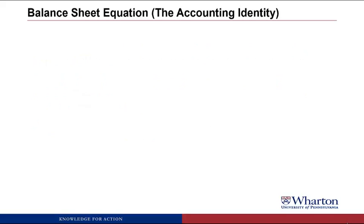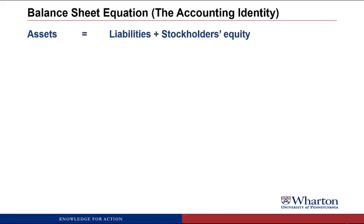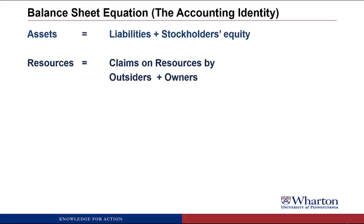Next, we're going to talk about the balance sheet equation, or the accounting identity. When you learn a foreign language, you often have to learn all of these cases and declensions — there's a whole lot of grammar to get down. In accounting, there's actually only one rule of grammar. Everything in accounting follows: assets equals liabilities plus stockholders' equity, which is the balance sheet equation. Another way to say that is all the resources of the company have to equal the claims on those resources, by either outsiders or by owners.